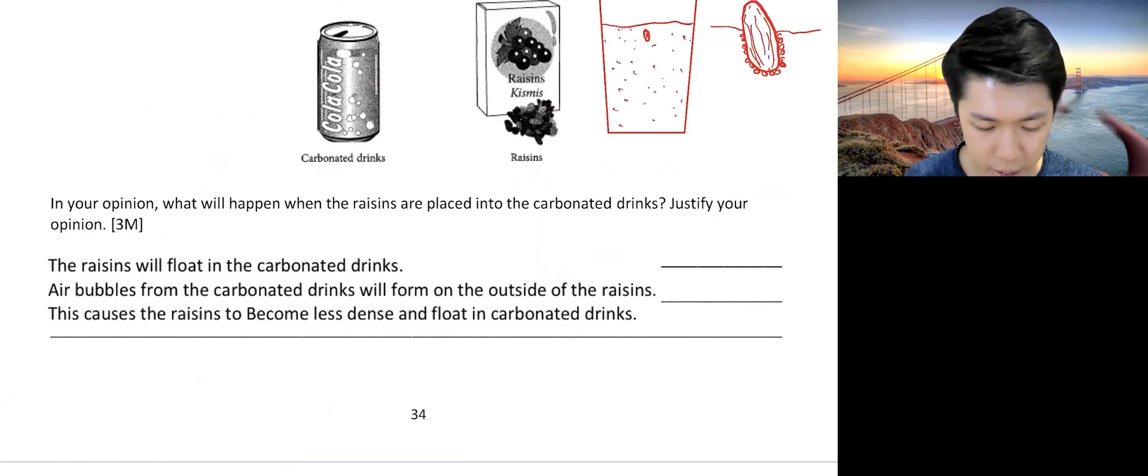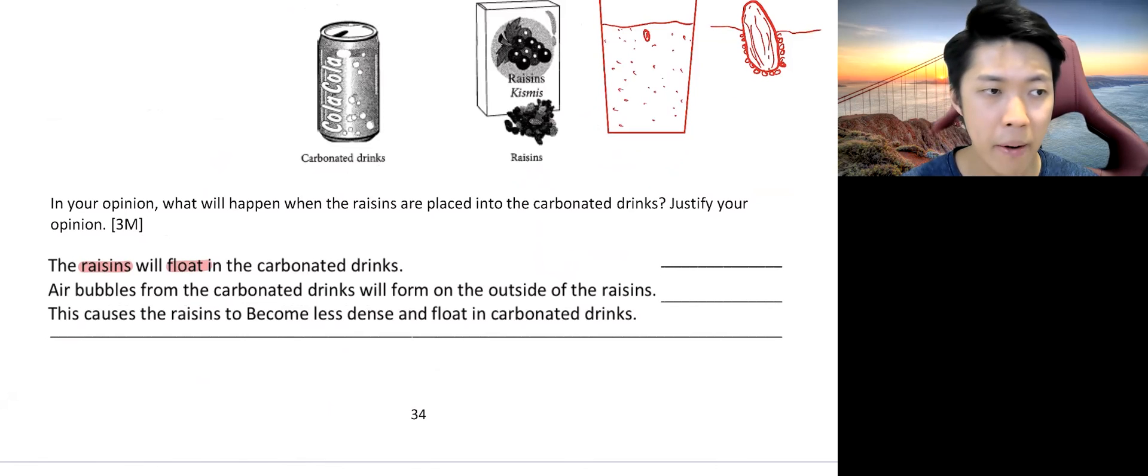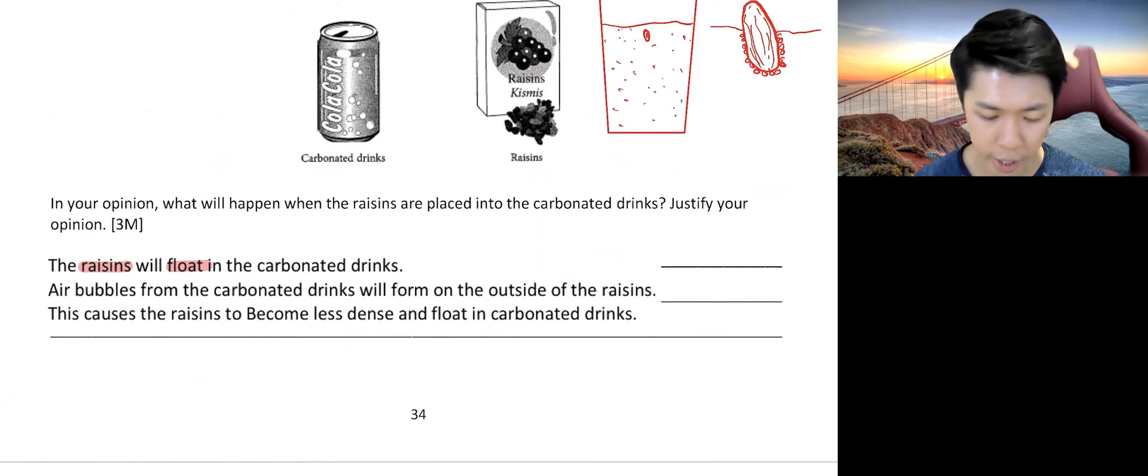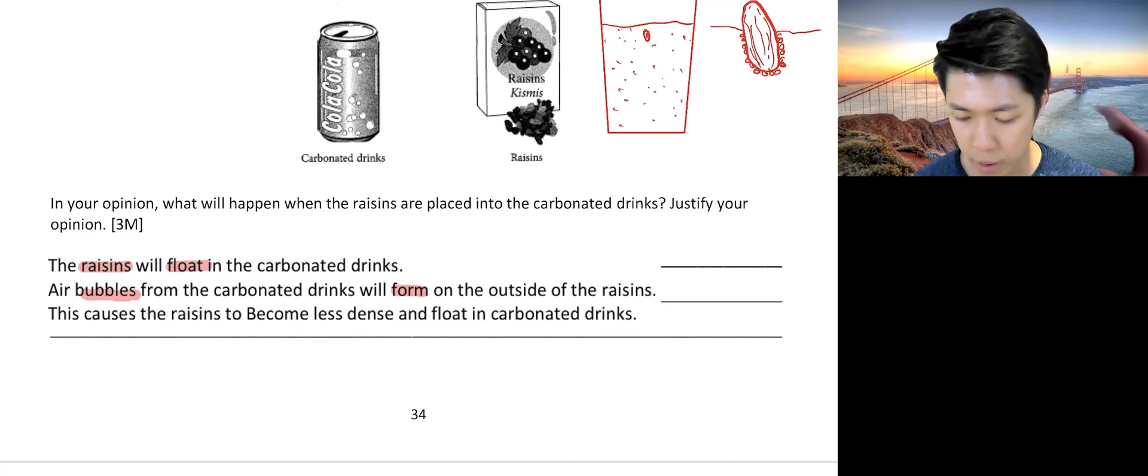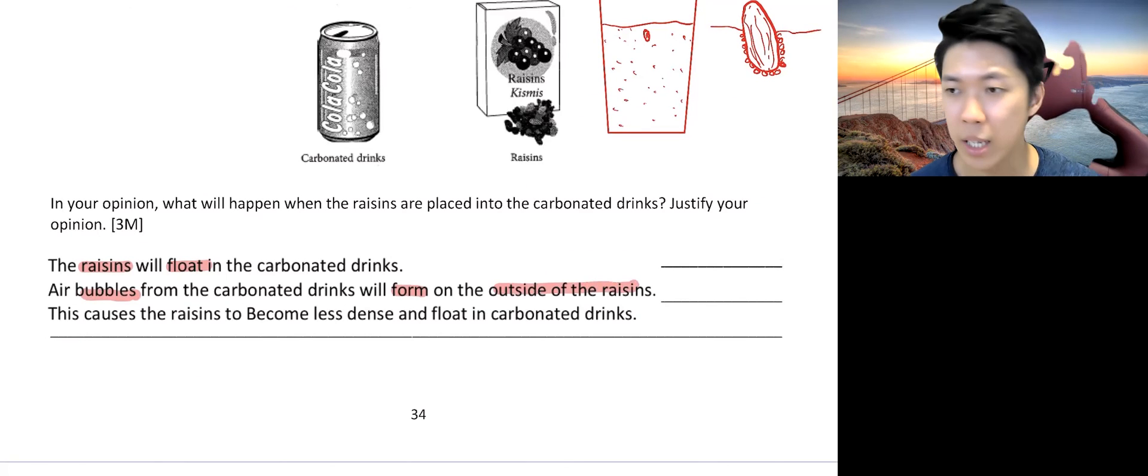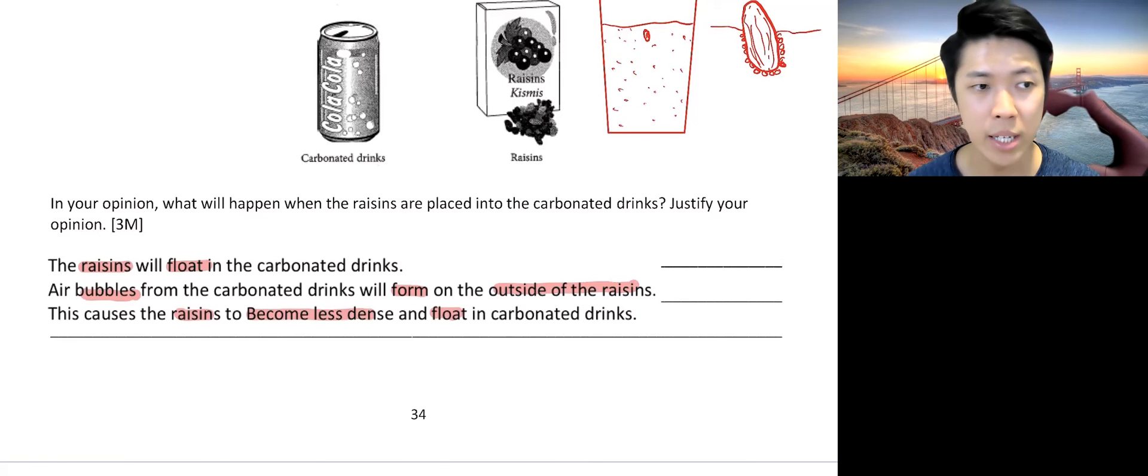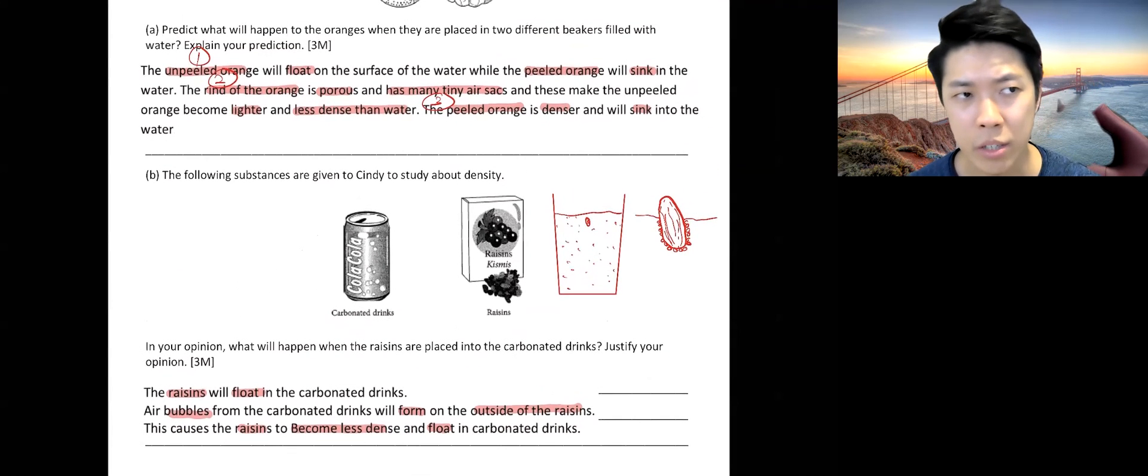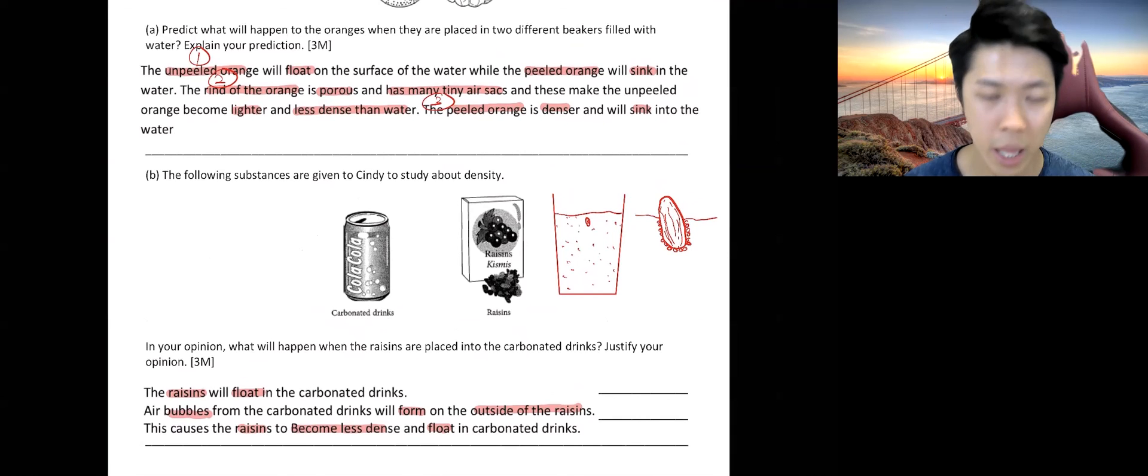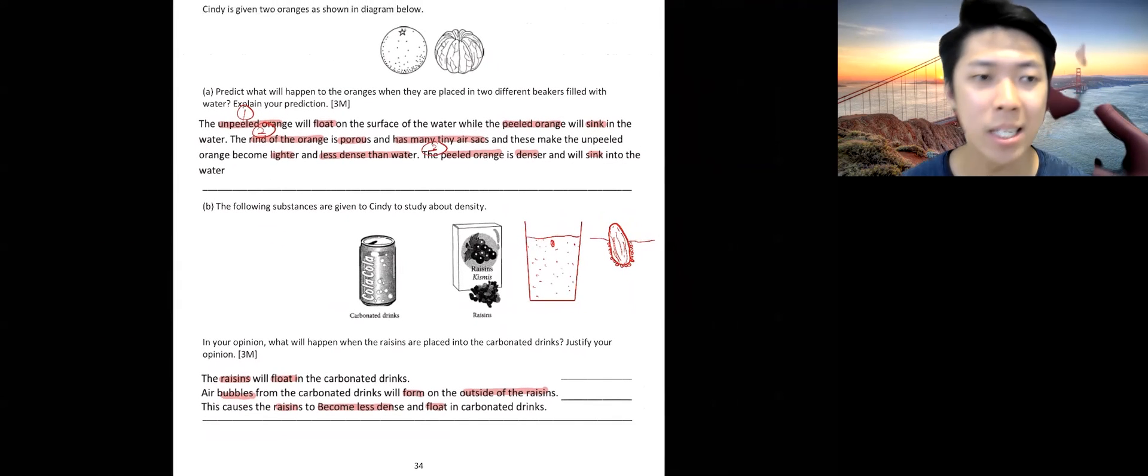So how do we answer? First, raisin floats. That's your keyword. In the carbonated drink, reason, one of the two marks. Bubbles from the carbonated drink form on the outside of the raisin. That's your second mark. Then the next thing is, this causes raisin to become less dense and float in carbonated drink. See, no fancy sentences, no fancy grammar, no fancy English. It's just pure important keywords and explain based on what you have learned previously.